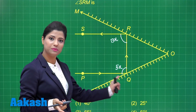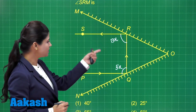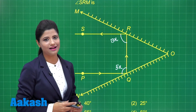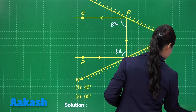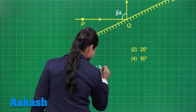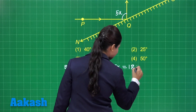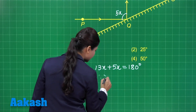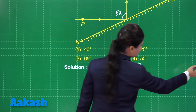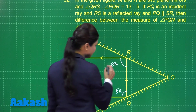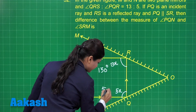It is also provided that PQ is parallel to SR. If PQ is parallel to SR, then these are two co-interior angles. The sum of any two co-interior angles is 180 degrees. So 13x plus 5x is equal to 180 degrees because these are co-interior angles. This gives the value of x equal to 10 degrees. If x equals 10 degrees, then this angle measures 130 degrees and this angle measures 50 degrees.